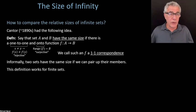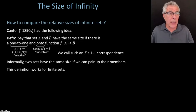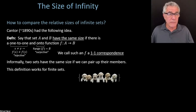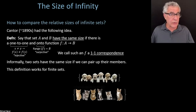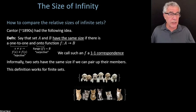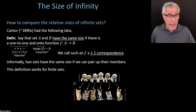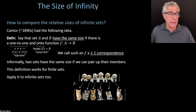Another way to look at it: two sets are the same size if we can match up the elements of one set with elements of the other. For finite sets, like a set of puppies and a set of kittens, we could count them both and see there are six in each, or simply match them up. This matching idea extends naturally to infinite sets, giving us a notion of what it means for two infinite sets to have the same size.